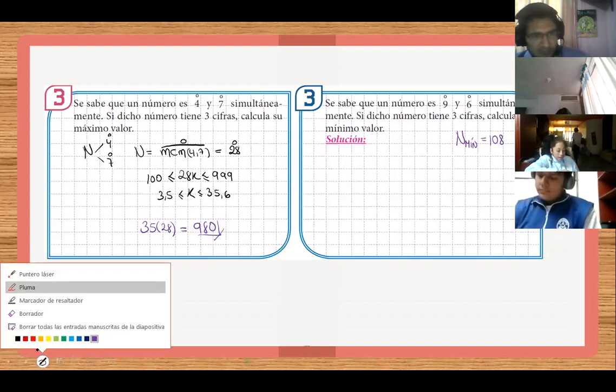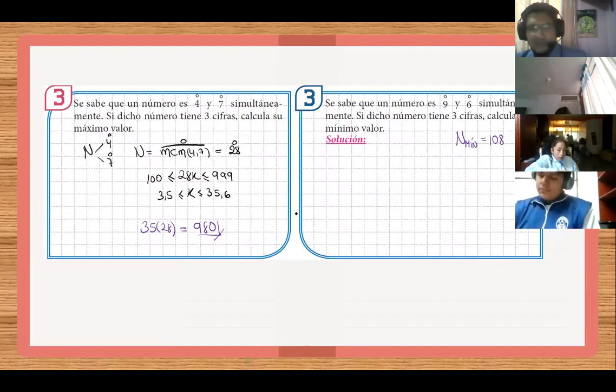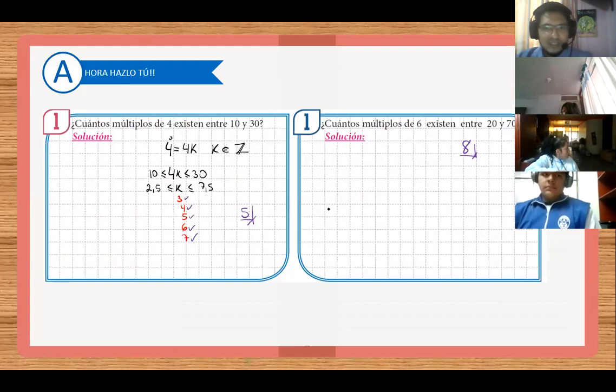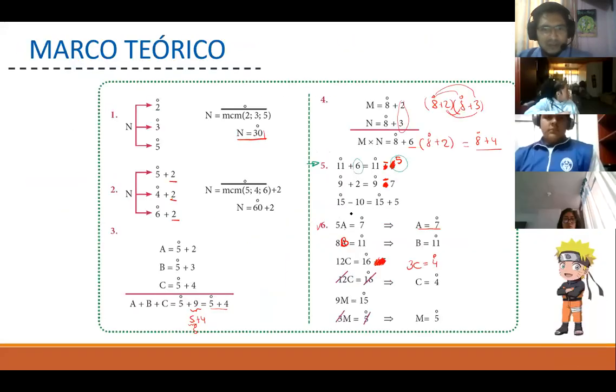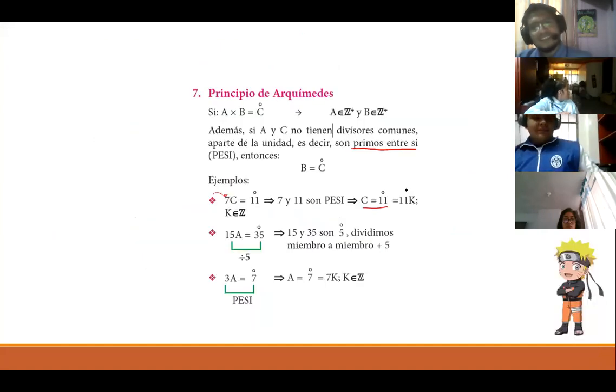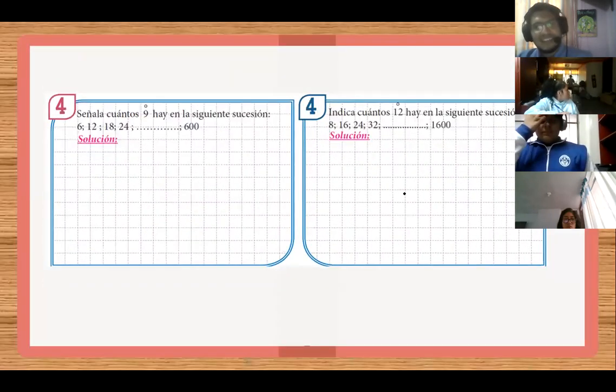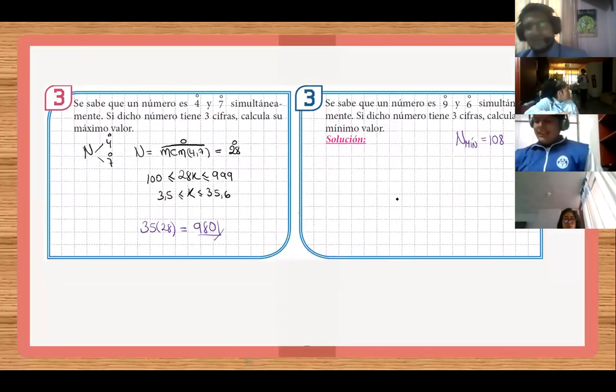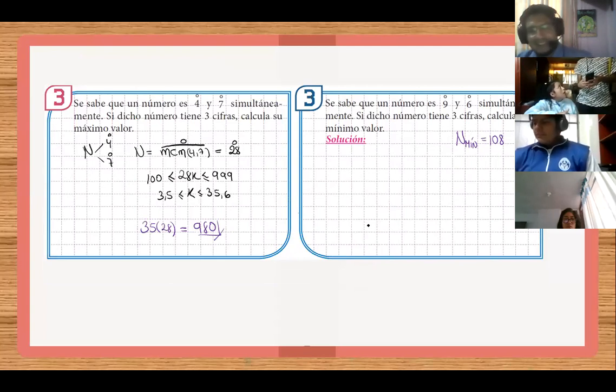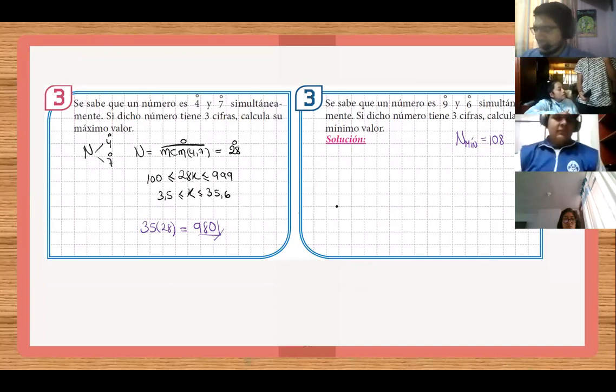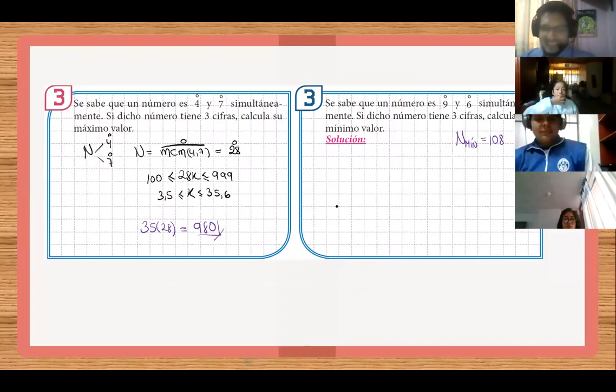Si quieren un punto para su parcial. Una tereita. Espérense. No hay tarea, no hay tarea. Por ustedes no hay. Ya después les dejo 50 ejercicios por un punto. Por dos. Es lo que hay.